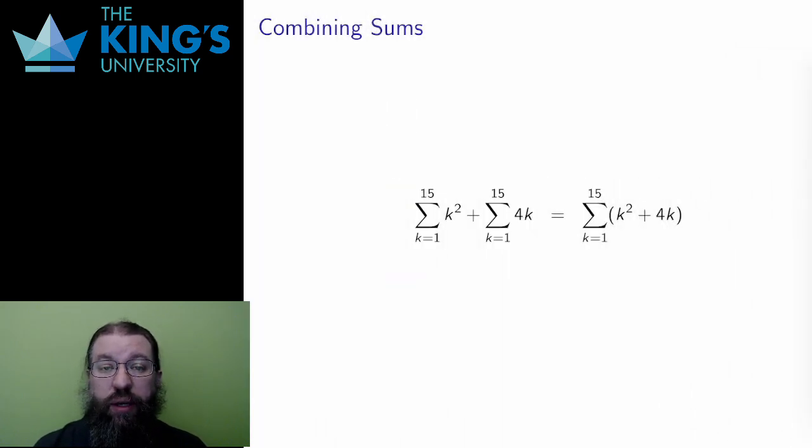In the previous slide, I split up the sum into two pieces. I can also combine two sums in the opposite way. The key observation here is that this is only possible if the bounds match. Here, both bounds are 1 to 15, so the combination into one sum is valid.